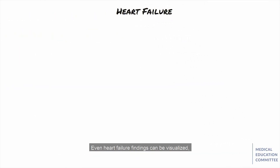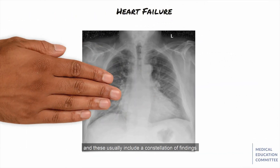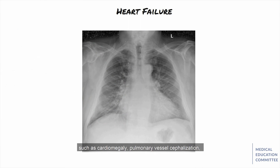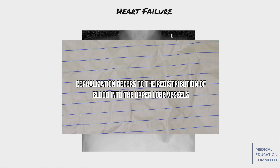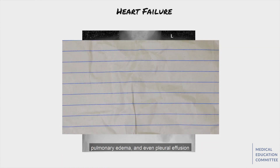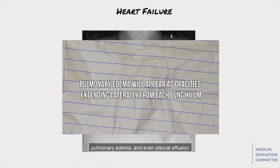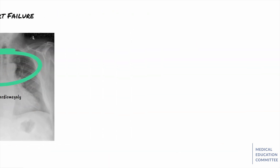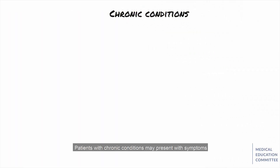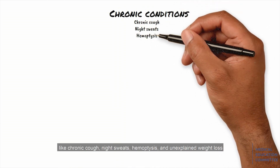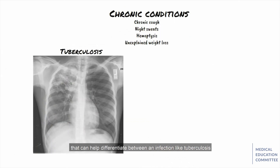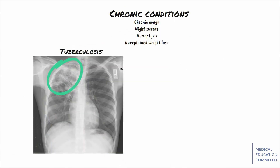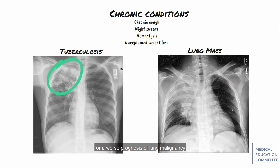Even heart failure findings can be visualized, and these usually include a constellation of findings such as cardiomegaly, pulmonary vessel cephalization, pulmonary edema, and even pleural effusion. Patients with chronic conditions may present with symptoms like chronic cough, night sweats, hemoptysis, and unexplained weight loss that can help differentiate between an infection like tuberculosis, or a worse prognosis of lung malignancy.